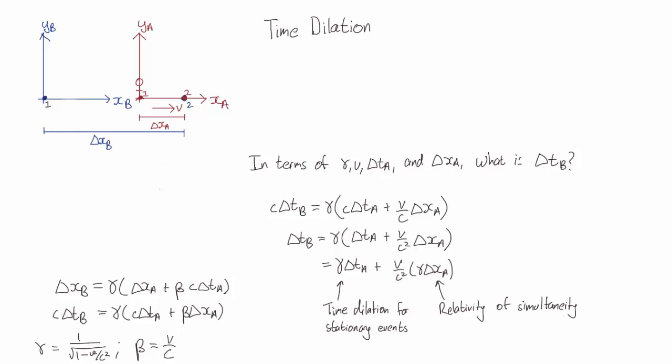So now the two events in Alice's frame are not just separated in time, they're also separated in space. And as we've seen before, a separation in space in Alice's frame will correspond to another separation in time in Bob's frame. So now the time difference Bob measures is made up from both of these contributions.